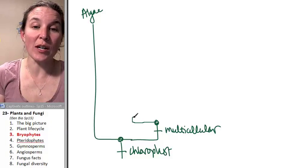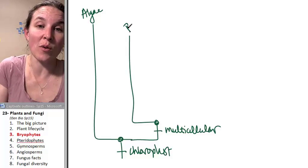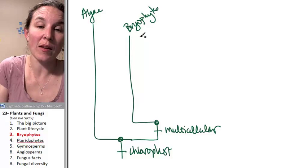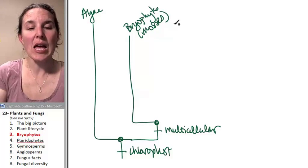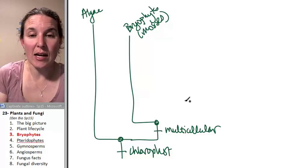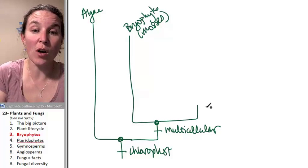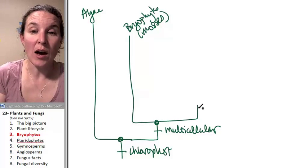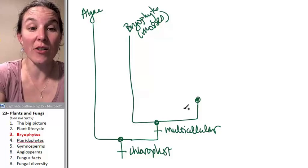The first group we're going to consider are the bryophytes, or mosses. I'm not going to build out the rest of the cladogram until we get to the other groups.